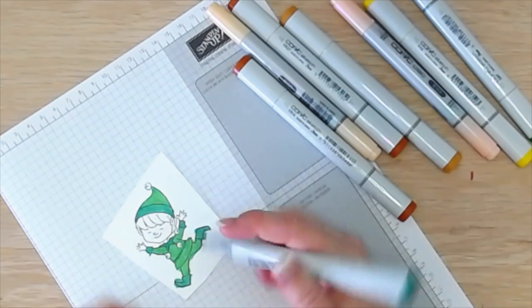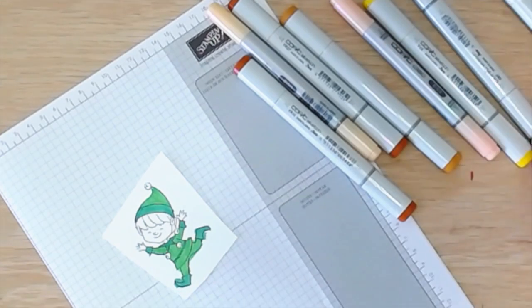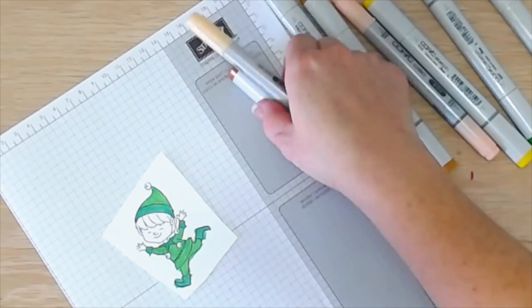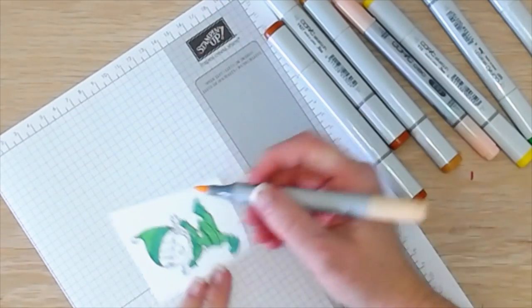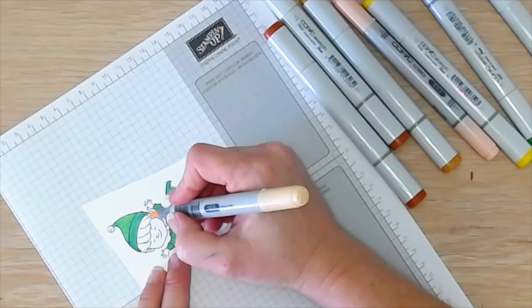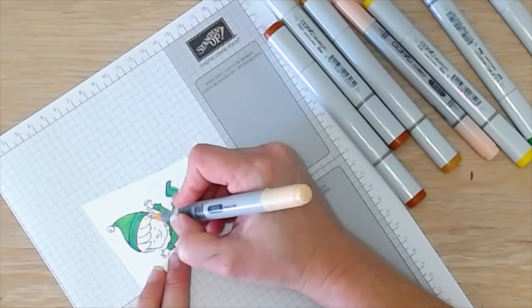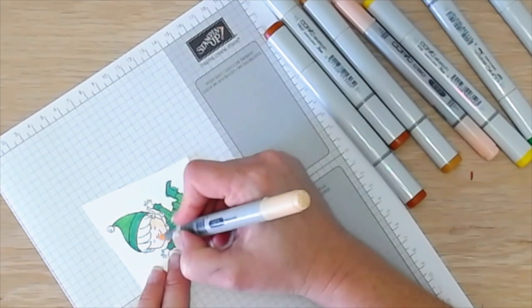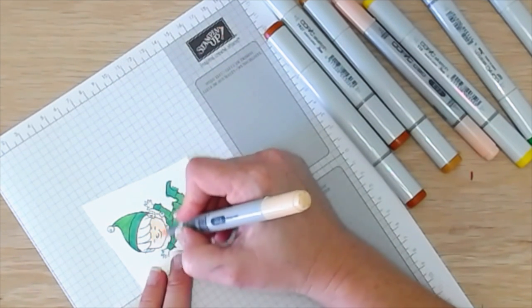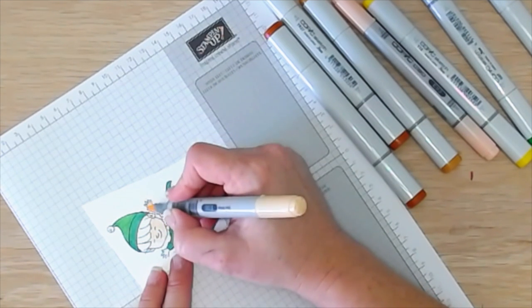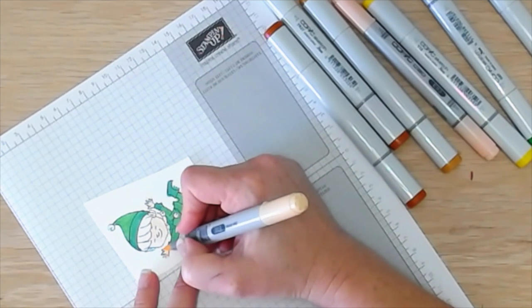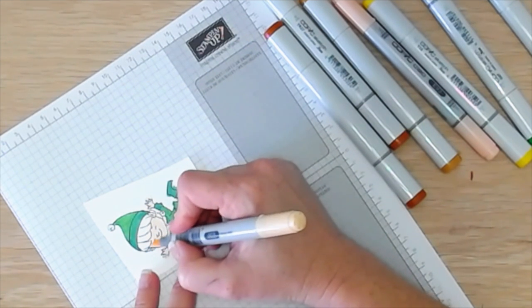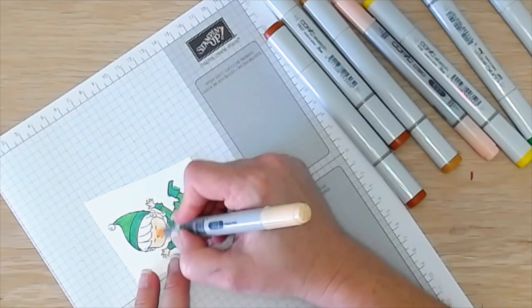I'm going to do a little bit of blending on his hair and his face, but not much. So for his face, I am using E00 to start out with. Just kind of covering his face, his neck and his hands with this color. And it's such a great skin tone color. I really love it.